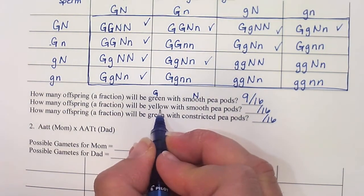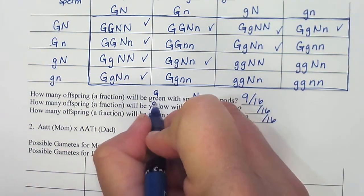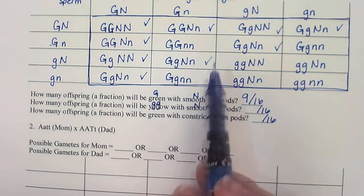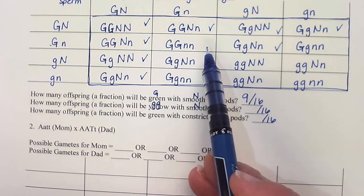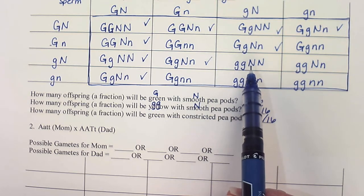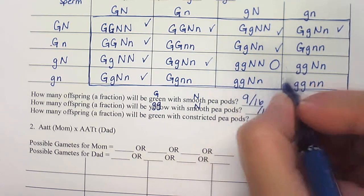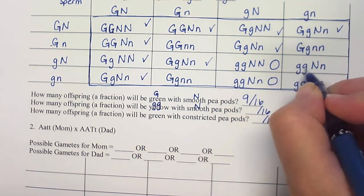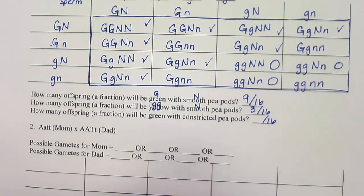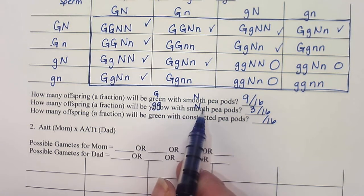Now let's look at yellow and smooth. Smooth is still dominant, but yellow is recessive — so I need little g, little g, and at least one big N. Looking at boxes not yet checked off: I find two little Gs with a big N here, here, and here. That gives three out of 16 that are recessive in color but dominant in shape.